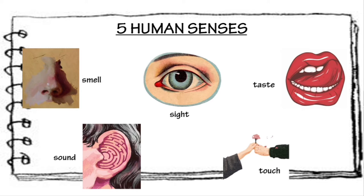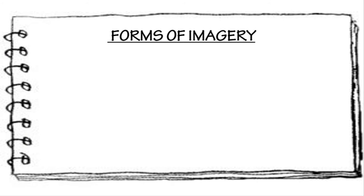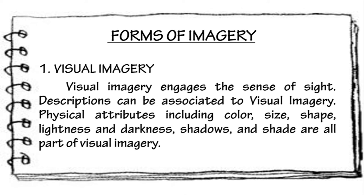I will now introduce to you the forms of imagery. The first form of imagery is the visual imagery. Visual imagery engages the sense of sight. Descriptions can be associated with visual imagery. Physical attributes including color, size, shape, lightness and darkness, shadows, and shade are all part of visual imagery.